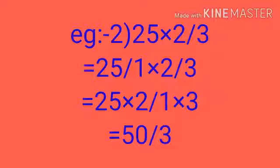Next example: 25 into 2/3. Here 25 is a whole number and 2/3 is a fraction. There is no denominator in 25, so we take 1 as the denominator. Write it as 25/1 into 2/3. The numerators are 25 and 2: 25 into 2 divided by 1 into 3. 25 into 2 is equal to 50, so the answer is 50/3.